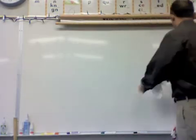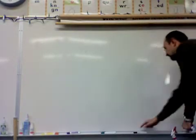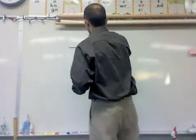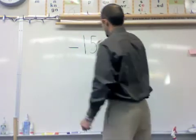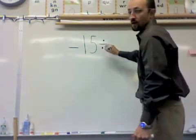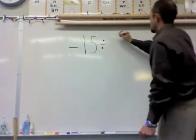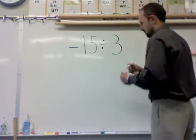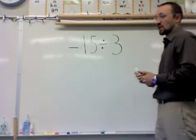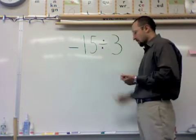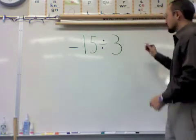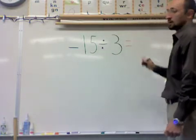And this time around, we're going to have different signs. So let's take negative 15, and we're going to divide our negative 15 by positive 3. So we have different signs now, a negative and a positive, so my answer is going to have to be negative.